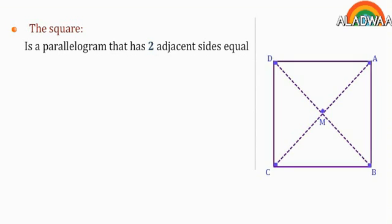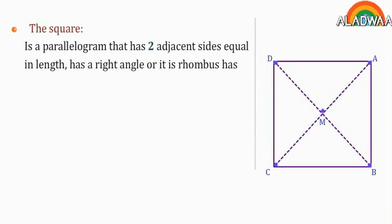The square is a parallelogram that has two adjacent sides which are equal in length, has a right angle, or it is a rhombus that has a right angle.